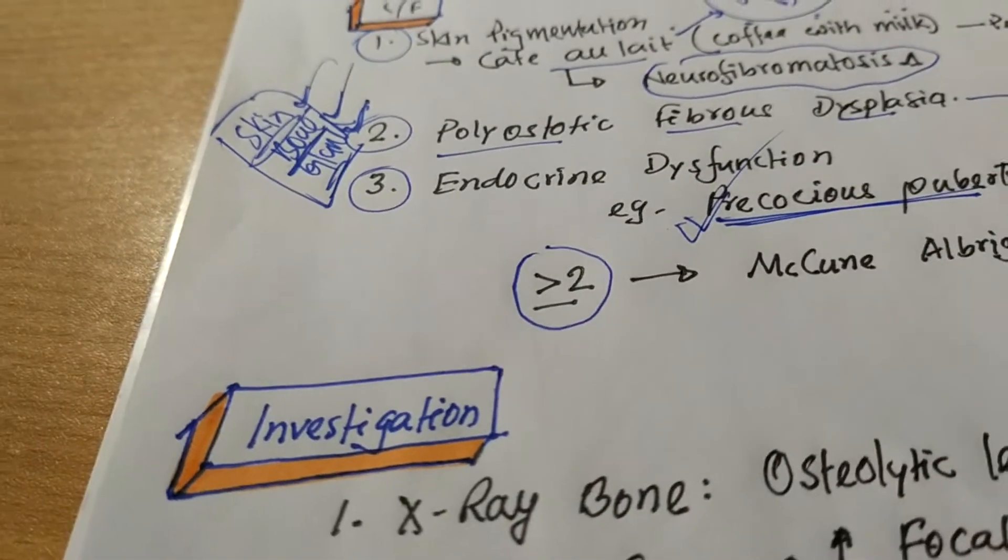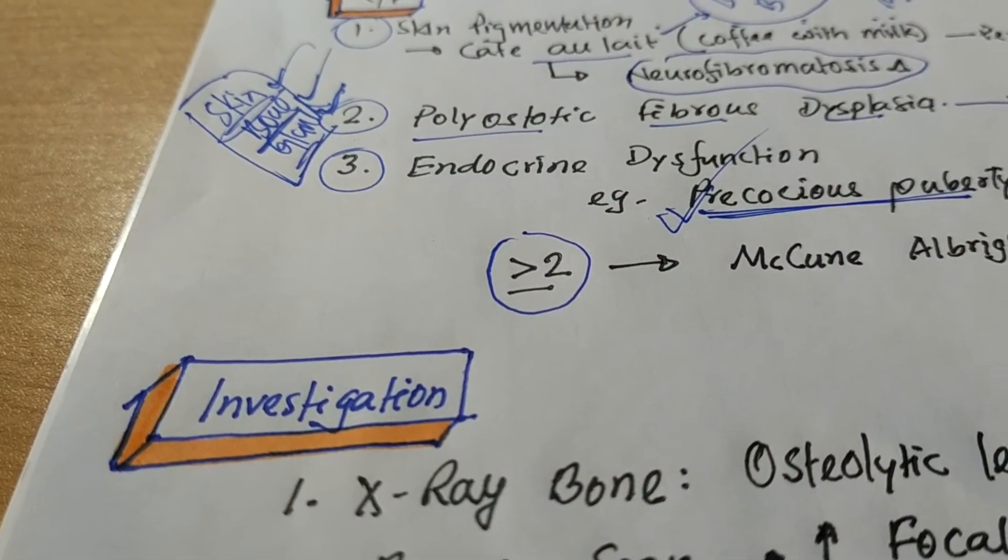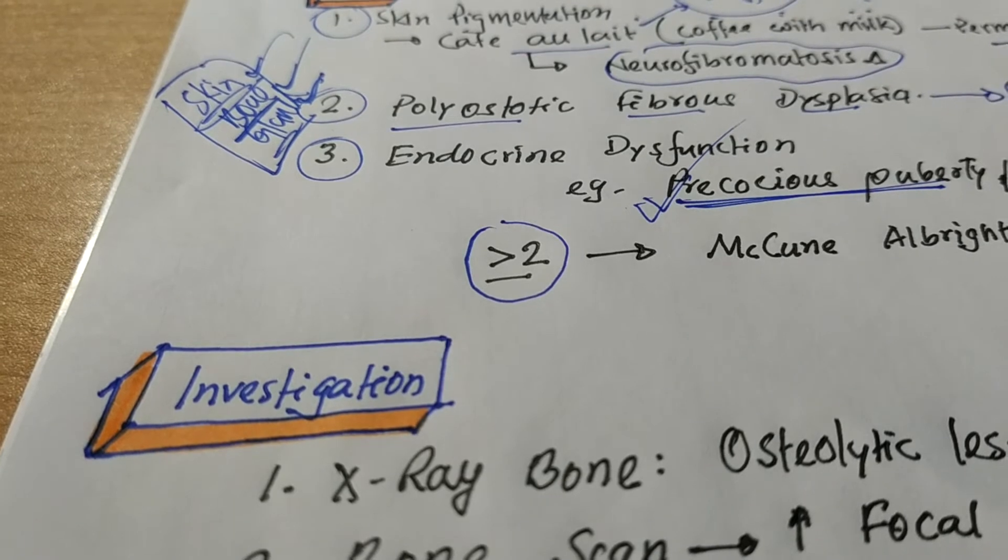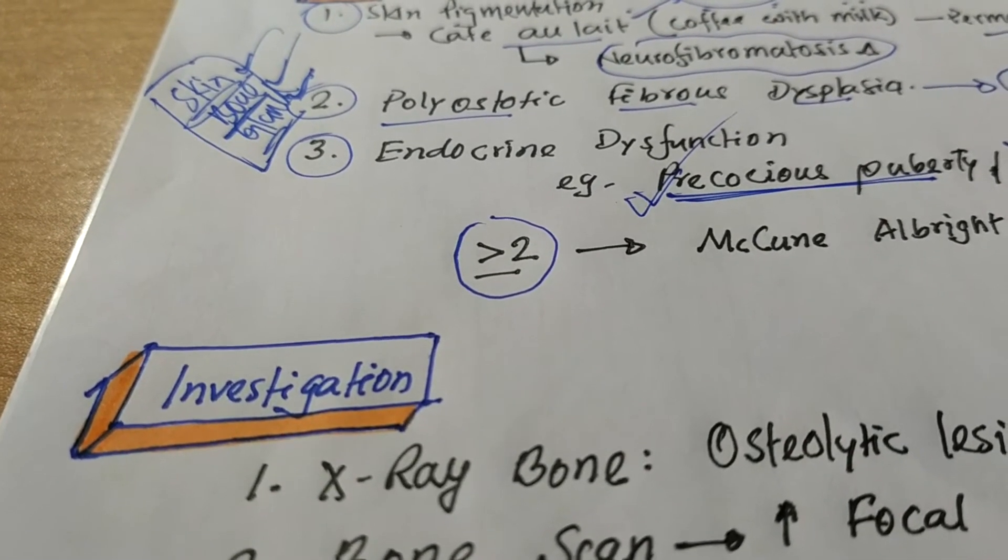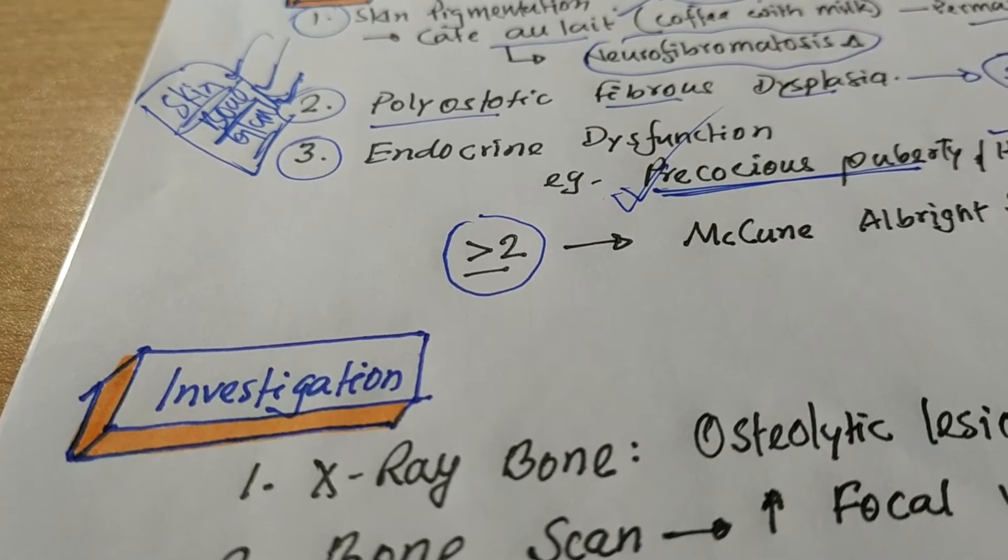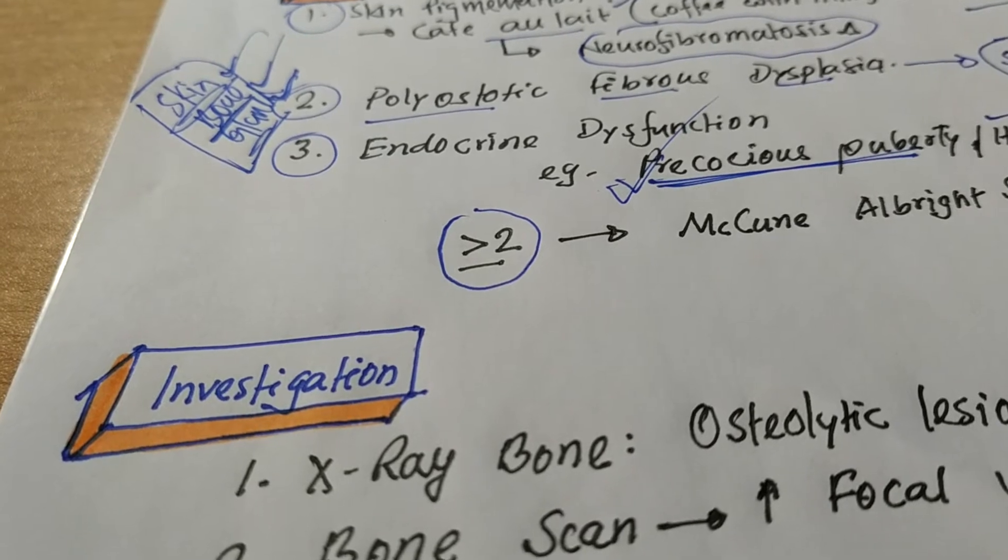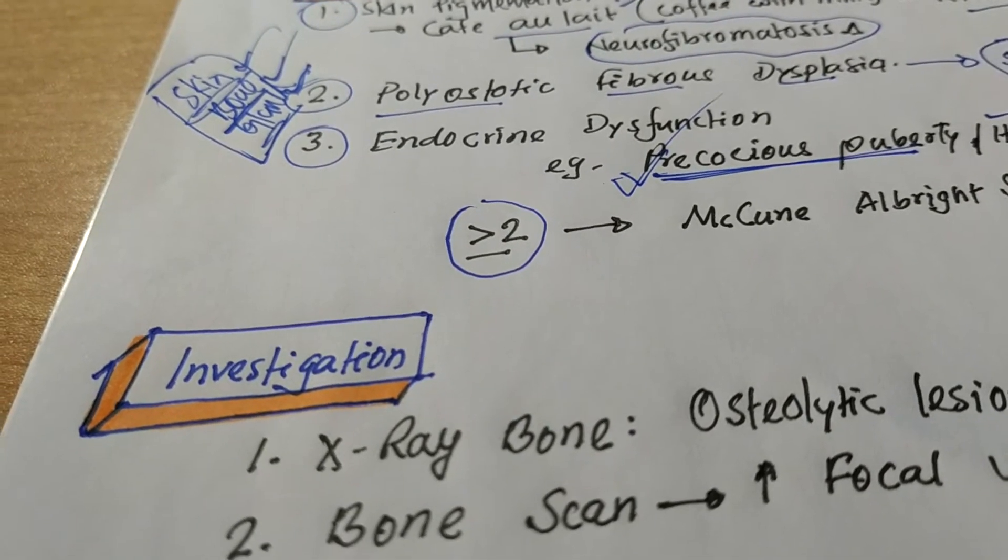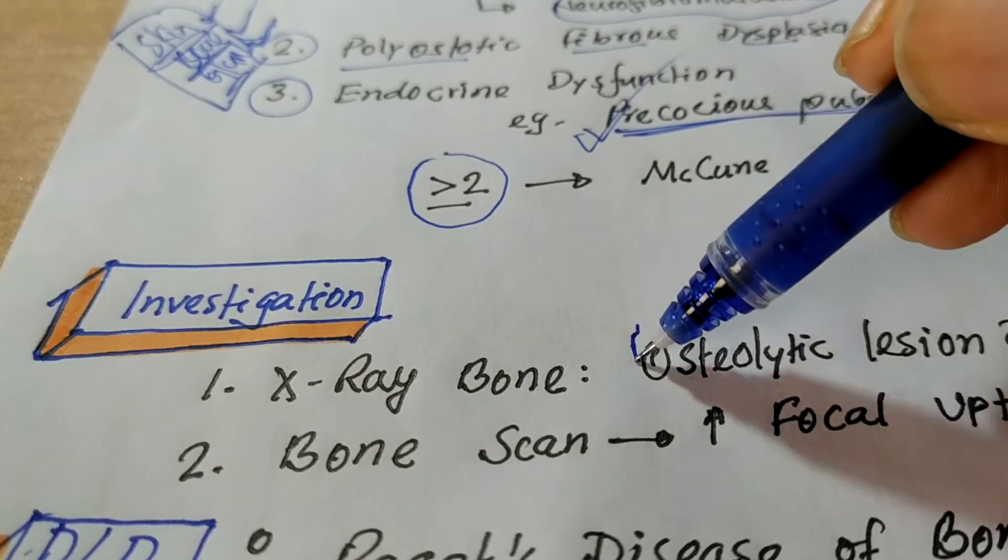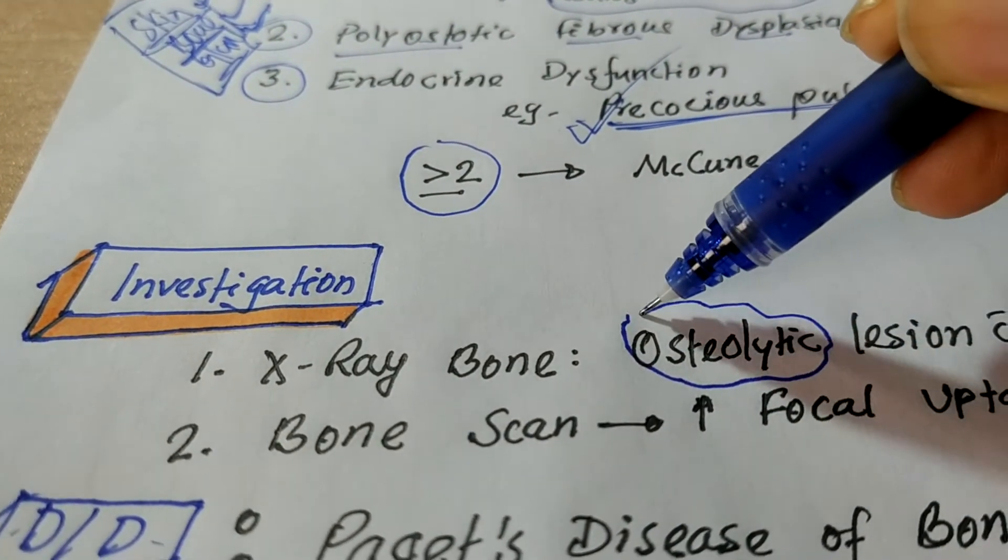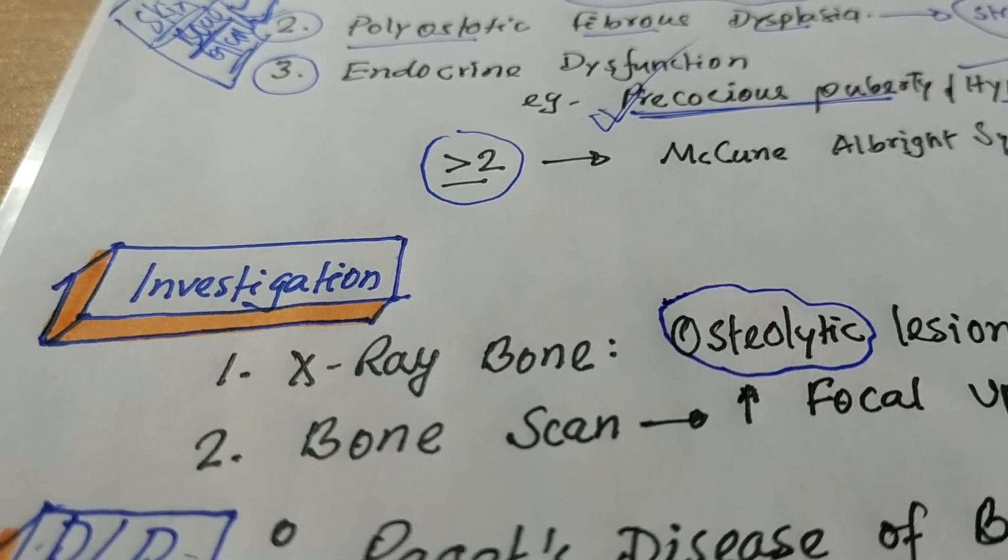Okay. So how will you investigate the McCune-Albright syndrome? The number one most important clinical investigation should be X-ray of the affected bone like femur or humerus or pelvis, where the patient suffers from pain or fracture. The typical X-ray finding is osteolytic lesion, mind it, osteolytic lesion, not sclerotic. Osteolytic lesion with bone expansion, bone expansion.